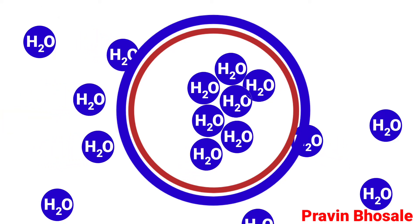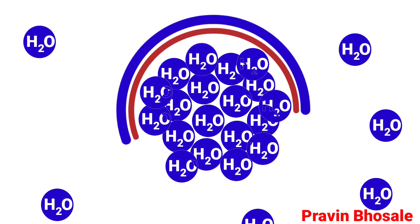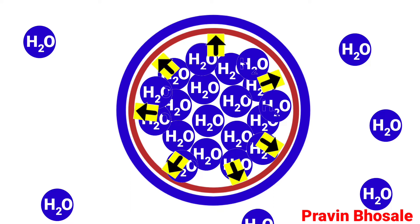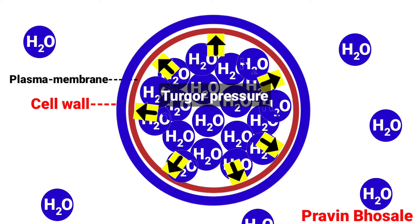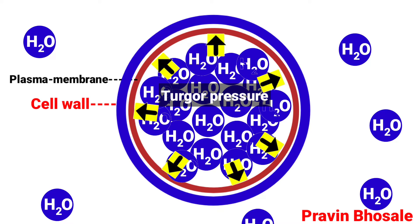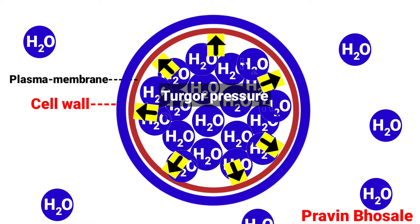More water molecules will enter the cell until the cell fully swells up. Because of this, there is pressure from inside the cell pushing on the plasma membrane and cell wall — it is pushed outwards. This pressure is called turgor pressure. The pressure developed inside the cell due to the movement of water molecules, acting from inside to outside on the cell wall, is turgor pressure.